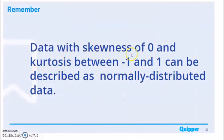So data with skewness of 0 and kurtosis between negative 1 and 1 can be described as normally distributed data. So this is what we want to happen, that the data will be normally distributed. This is one of the requirements. Before we can apply or use specific statistical tools, like the test of correlation.